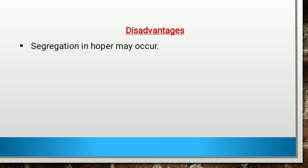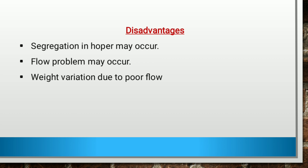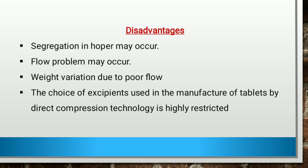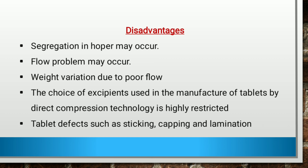Disadvantages of direct compression: First, segregation in the hopper may occur due to variation in particle size or density of formulation ingredients, and also due to vibration movement of the hopper. Second, flow problems may occur due to poor flow from hopper to the die cavity, which may also result in weight variation problems. Third, the choice of excipients is highly restricted since most materials do not have inherent binding properties. Fourth, tablet defects such as sticking, capping, and lamination are usually pronounced in tablets manufactured by direct compression.